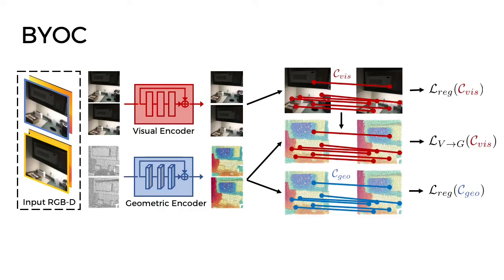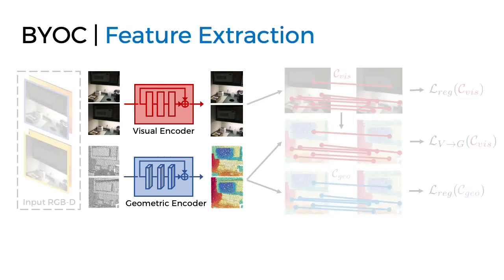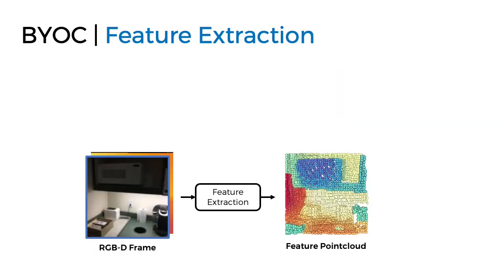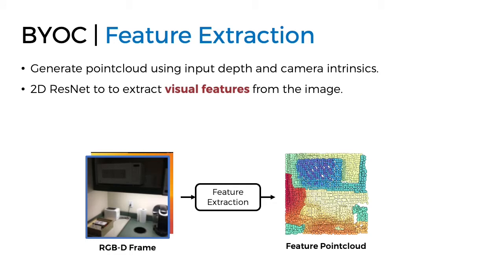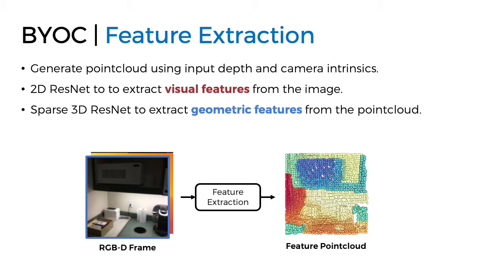Now we discuss our approach in more detail, focusing first on feature extraction. Given an RGBD image, we would like to generate a point cloud where each point has both a visual and a geometric feature descriptor. We first generate the point cloud using the input depth and camera intrinsics. We then use a 2D ResNet to extract visual features from the image, and a sparse 3D ResNet to extract geometric features from the point cloud. At the end of feature extraction, each video frame is represented by a point cloud where each point has a 3D coordinate, a geometric feature, and a visual feature.